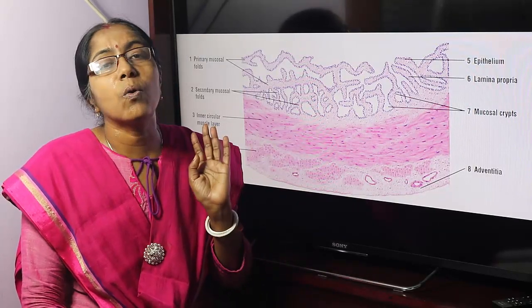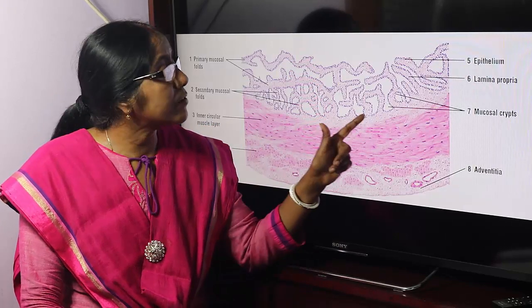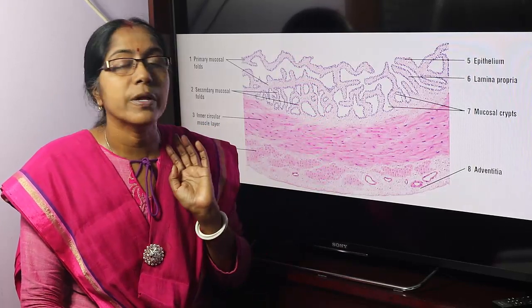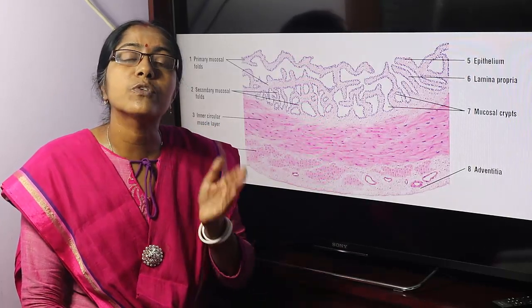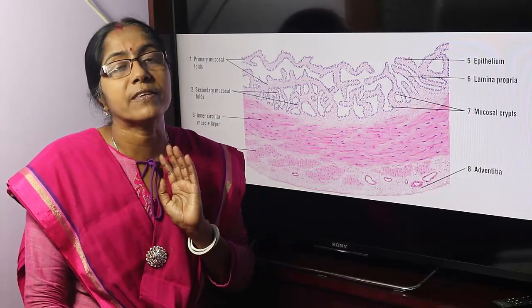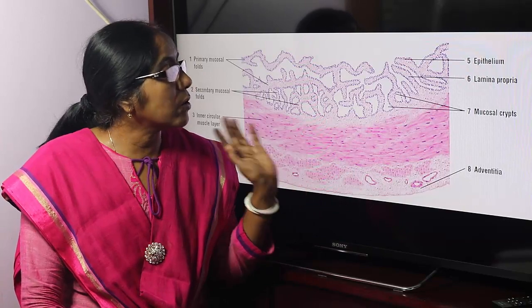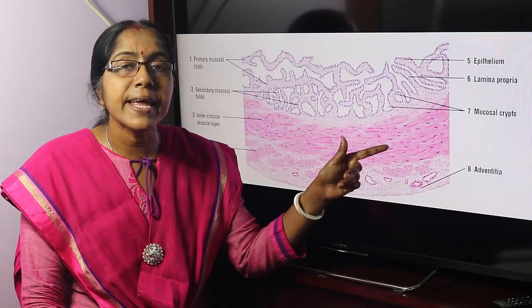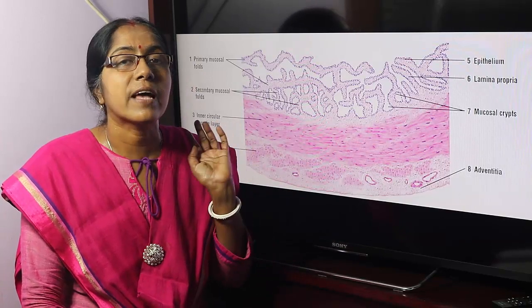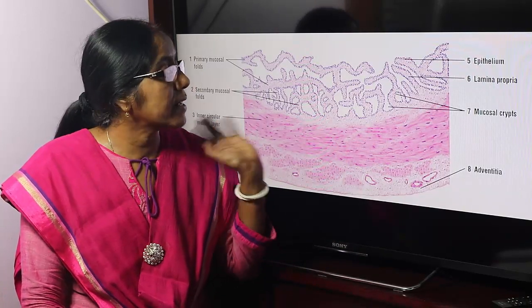The second coat is the muscular coat. It is composed of smooth muscle fibers arranged as an outer longitudinal and an inner circular muscle layer.